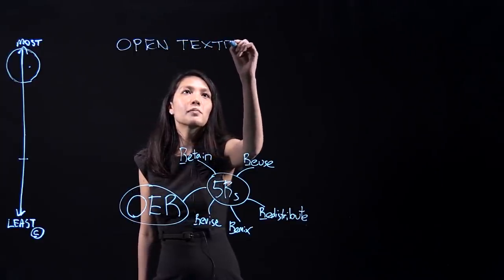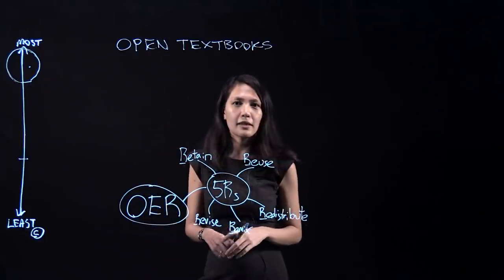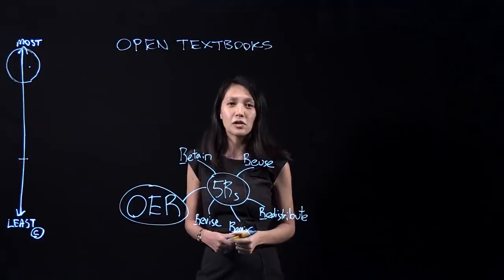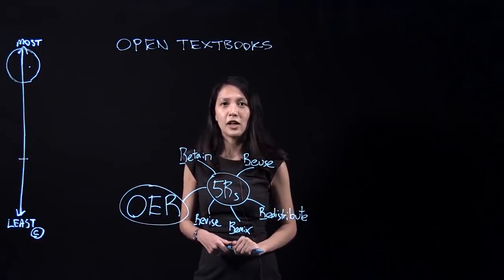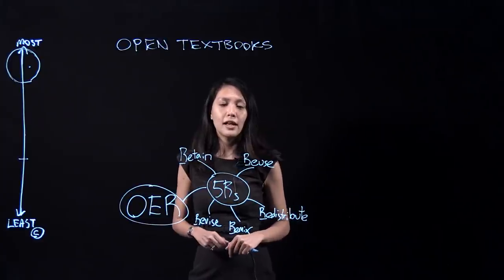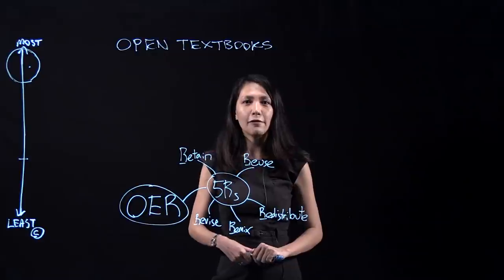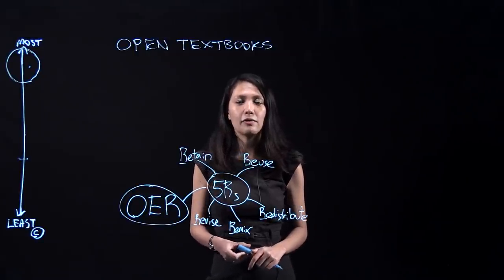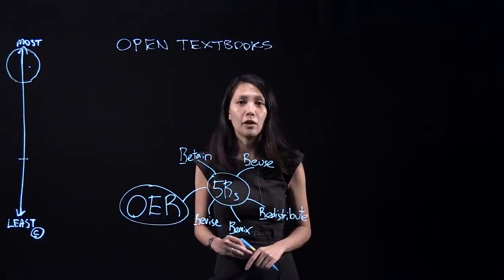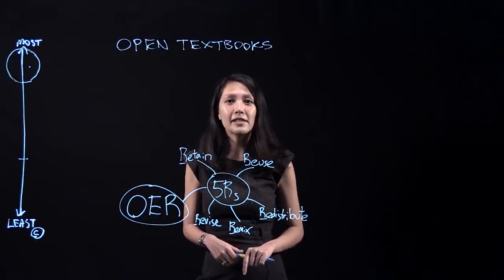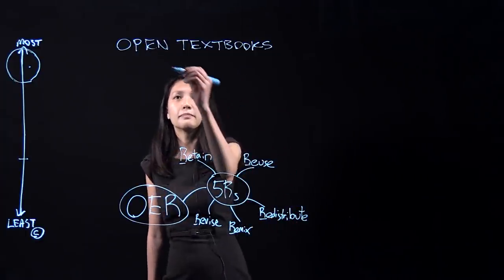Open textbooks first came about because of the textbook problem, the textbook problem being that textbooks just cost way too much. You might notice these days that they cost a few hundred dollars each. Students are simply not buying these textbooks. In fact, recent surveys actually revealed that anywhere from two thirds to three quarters of tertiary students are not purchasing their textbooks, and this can't be good for their learning. So open textbooks actually form part of a solution to this problem.